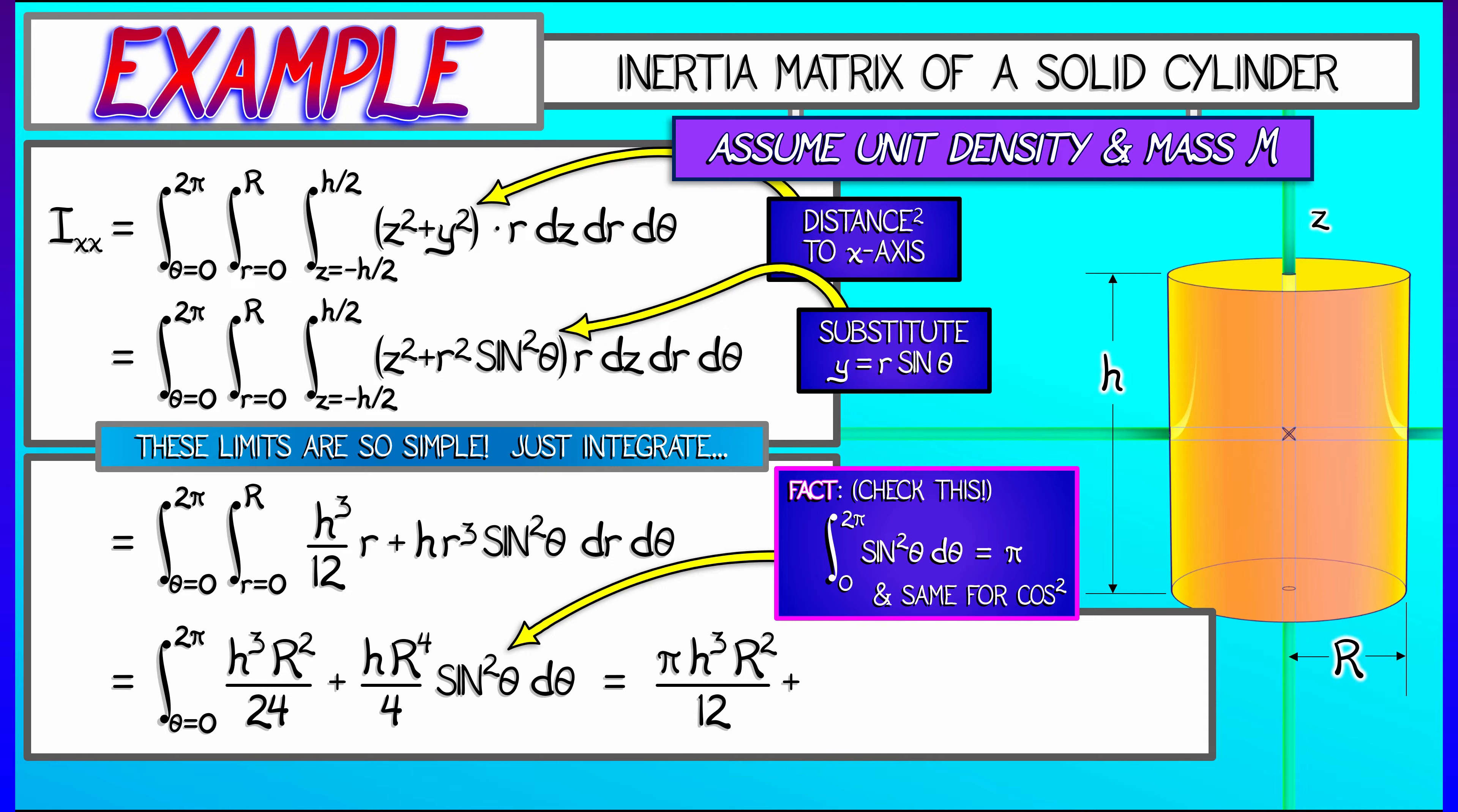You might want to remember that, because one tends to use that pretty often. So check that, plug that in. Then we get, for this second term, a value of pi h capital R to the fourth over 4.